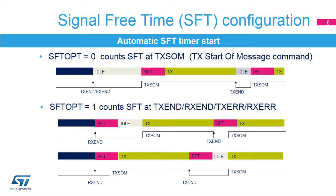Otherwise, it is possible to configure the SFT value to ensure a fixed timing value. Possible values are 0.5, 1.5, 2.5, 3.5, 4.5, 5.5, and 6.5 data bit periods.